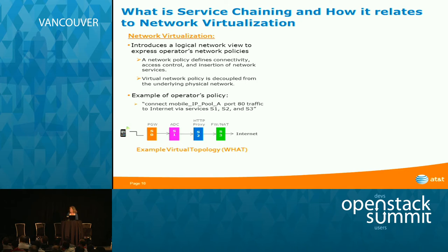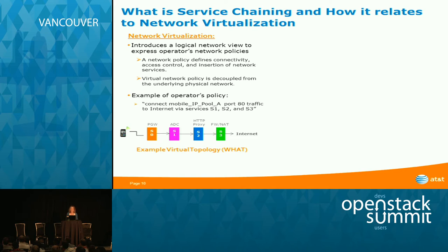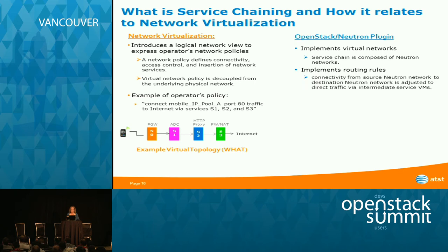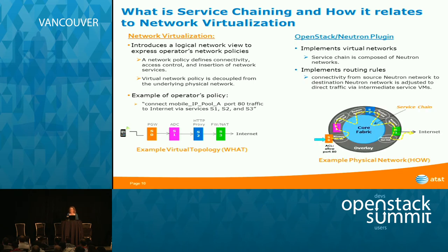For example, working in mobility, a very simple service chain represents the so-called Gi interface of a 3GPP network. When a data call terminates on the P-GW (Packet Gateway), port 80 HTTP traffic typically goes through an ADC load balancer, then through an HTTP proxy, then a firewall function, and then to the internet. This is the level at which operators want to express policy and have it automatically implemented in the OpenStack cluster — that's where OpenStack and the Neutron plugin come in.